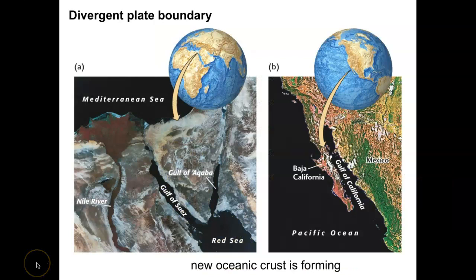A couple more examples of divergent plate boundaries. Over here in the eastern Mediterranean Sea, we have more splitting with the Gulf of Suez and the Gulf of Aqaba getting bigger and bigger at the northern end of the Red Sea.